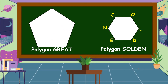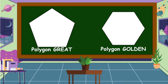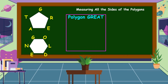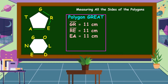Next, we are going to measure the sides and angles of each polygon. After measuring all the sides, here are the results for polygon GREAT. Line segment GR measures 11 cm, line segment RE measures 11 cm, line segment EA measures 11 cm, and line segment TG measures 11 cm.